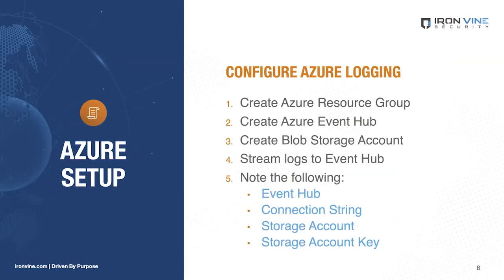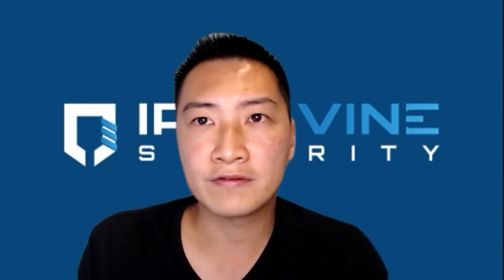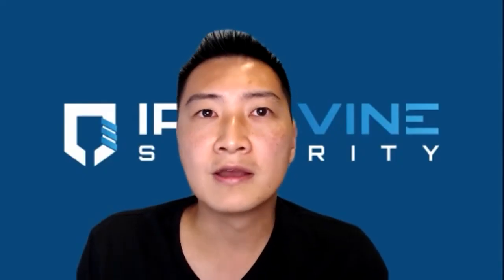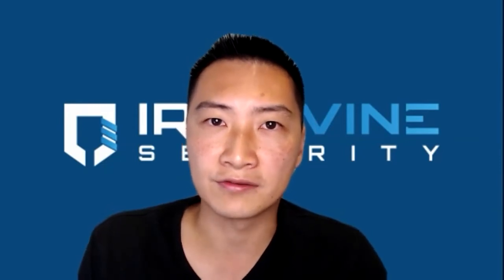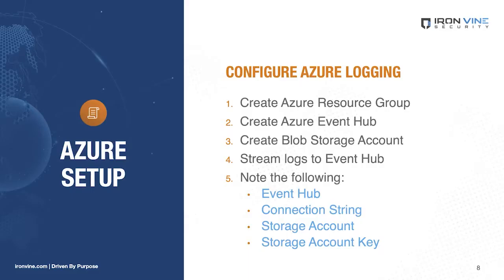Now let's set up Azure to send logs. This process is a bit more involved than setting up the 365 logs. We'll need to first create an Azure resource group, then an Azure event hub, a blob storage account, and then configure Azure to stream the logs we want to this hub. Elastic's documentation provides direct links to the relevant Microsoft support pages to set this up. With that completed, we'll want to note the event hub name, the connection string, the storage account, and storage account key for setting up the FileBeat module.